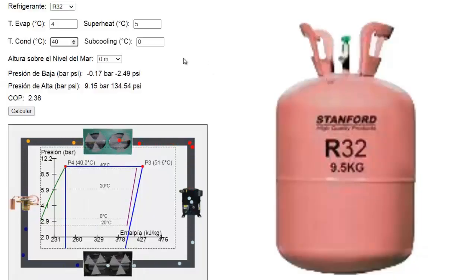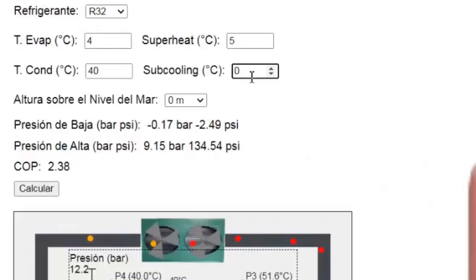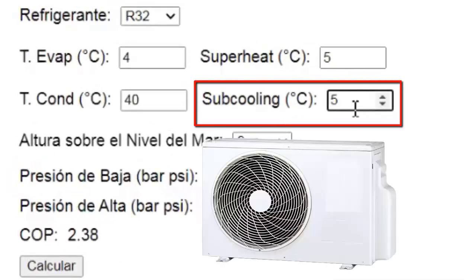Now, let's select a sub-cooling of 5 degrees Celsius. Sub-cooling is the decrease in the refrigerant's temperature when it is in liquid phase at the condenser outlet, which improves system efficiency.